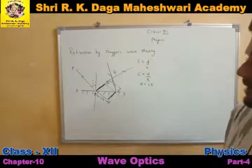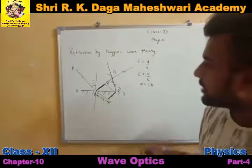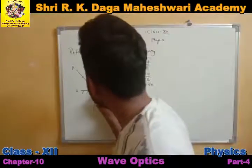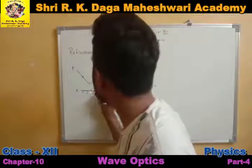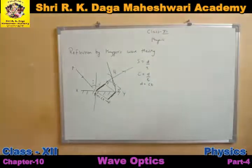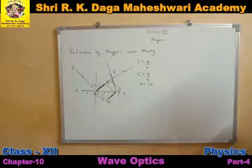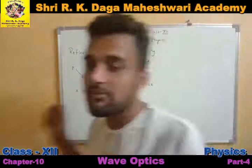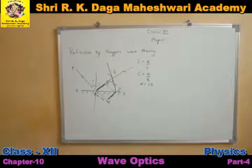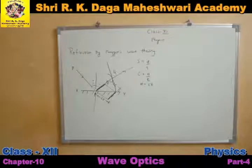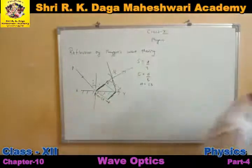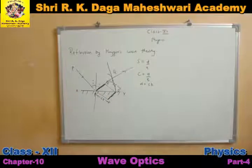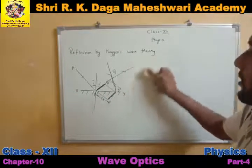The angle which this reflected ray makes with the normal is called the angle of reflection and it is denoted by small r. In this way, Huygens explained reflection with the help of wave theory and wavefronts. Now we will understand how he proved reflection — let us go through the derivation.